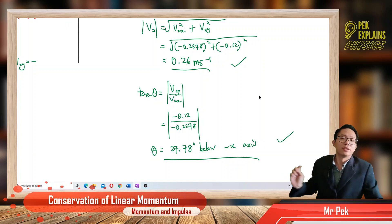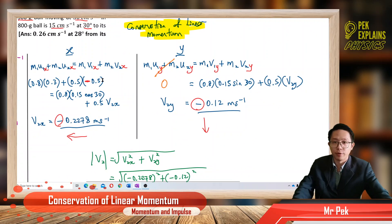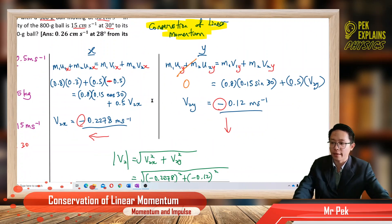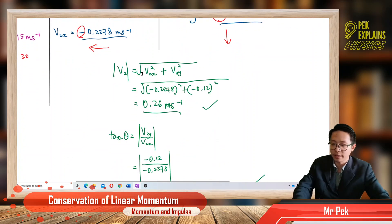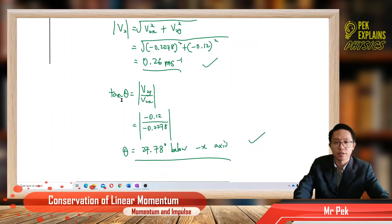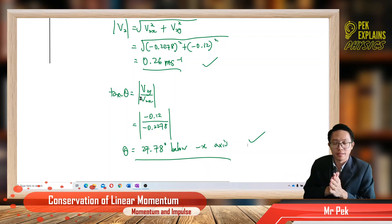That's it for two-dimensional collision. We must always resolve into x and y components. Don't forget: if there is a negative sign for a ball moving in the opposite direction, you must put negative. Then resolve the vector using cos θ and sin θ, combine using Pythagoras theorem to find the magnitude, and find the direction using tangent theta. I hope you enjoyed the video. Please subscribe and like.